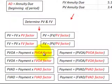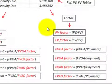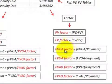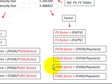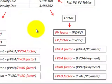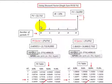These discount factors and payment amounts apply to each annuity type. The discount factors shown here are the ones we'll be referencing on our cash flow diagrams as well as in these formulas.